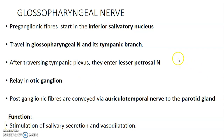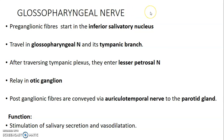We continue with our series on the parasympathetic system, which is craniosacral in origin. We had already discussed the third and seventh cranial nerves. Now, for the ninth cranial nerve, the preganglionic fibers originate from the inferior salivatory nucleus. Remember, the ones from the facial nerve were from the superior salivatory and lacrimal nucleus. These ones are from the inferior salivatory nucleus.